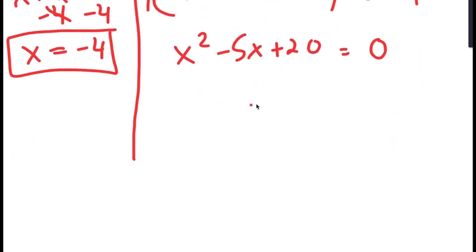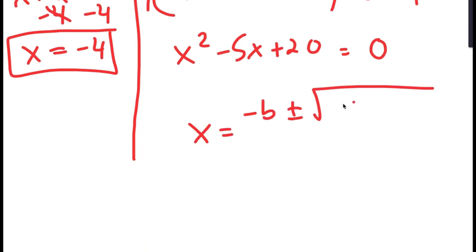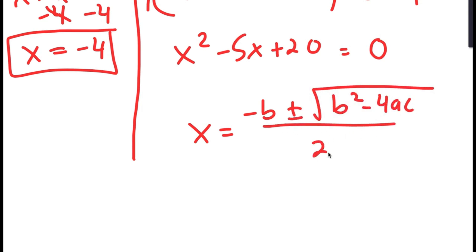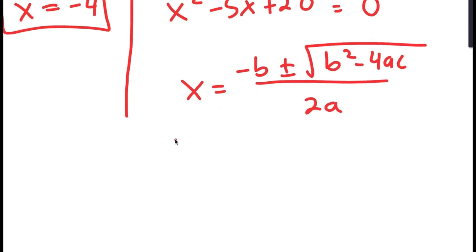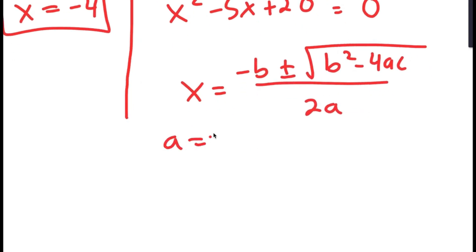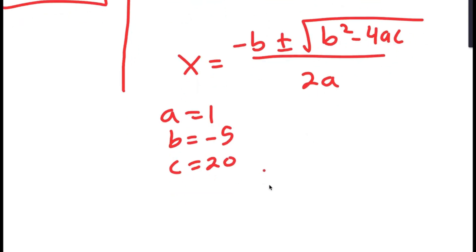To solve this, I'm going to use the quadratic formula: negative b plus or minus the square root of b squared minus 4ac, all over 2a. In this case, a is 1, b is negative 5, and c is 20.